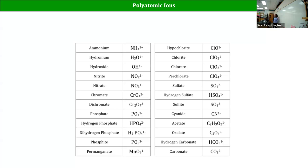Not all substances have common polyatomic forms - per-sulfate and hyposulfite aren't common polyatomic ions. But we could predict what those charges would be if we know these rules. Memorize the -ates, then know how to adjust them.